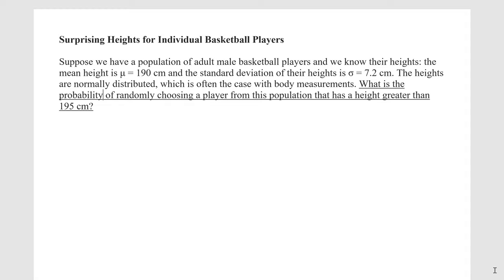We want to know: what's the probability of randomly choosing a player from this population that has a height greater than 195 centimeters? I want you to notice a couple things. Here I have mu and sigma, because we're talking about an entire population of people. We also want to end up with some sort of probability as our answer. So I'm going to start out by just drawing what's going on in this population.